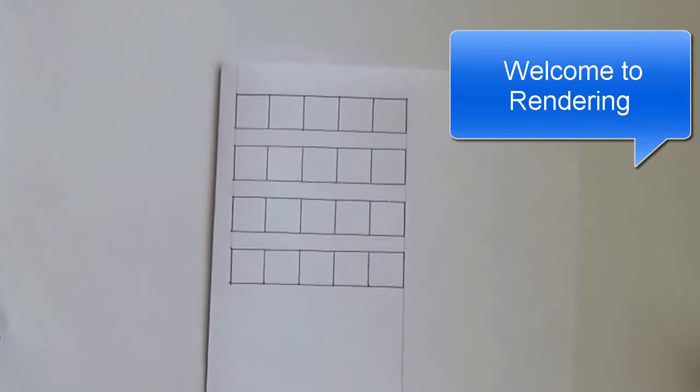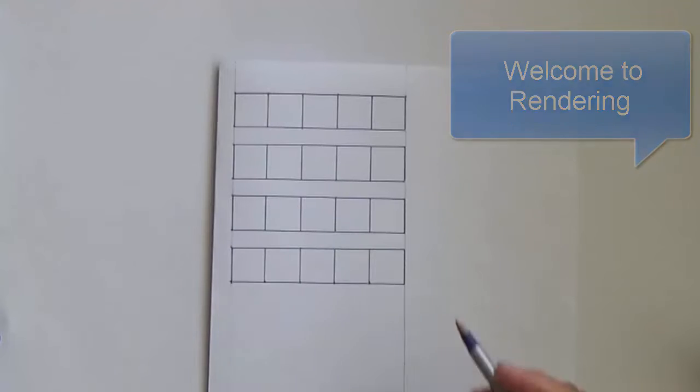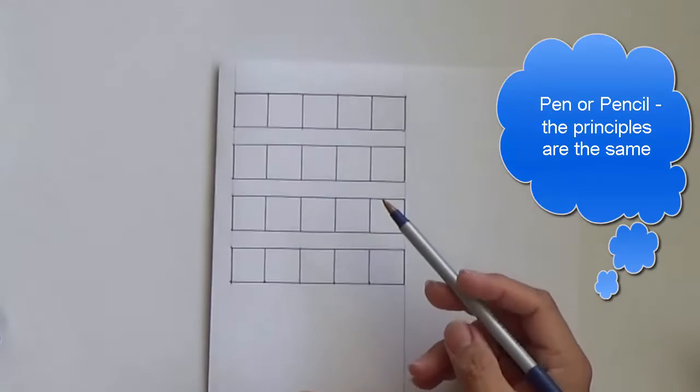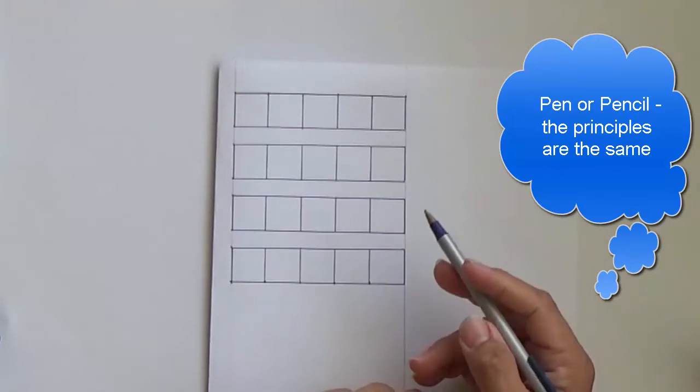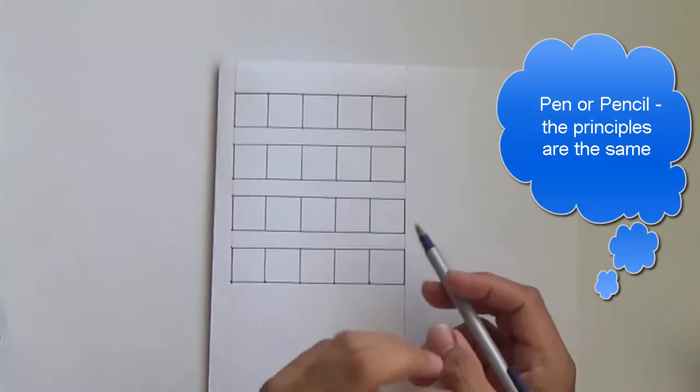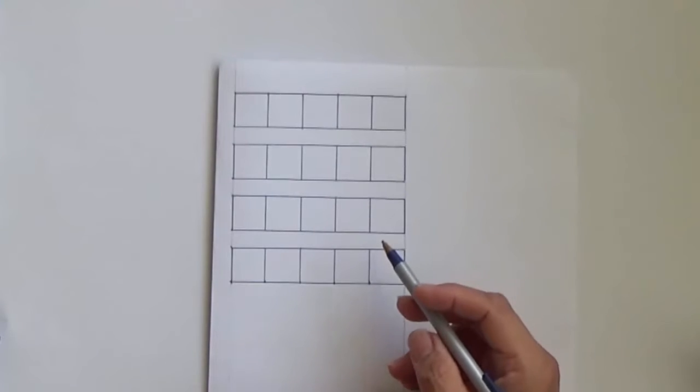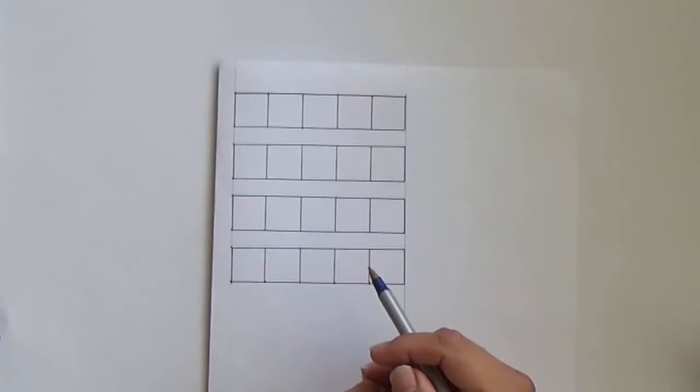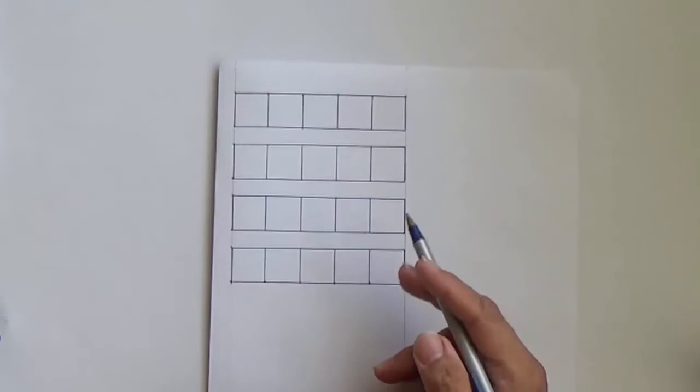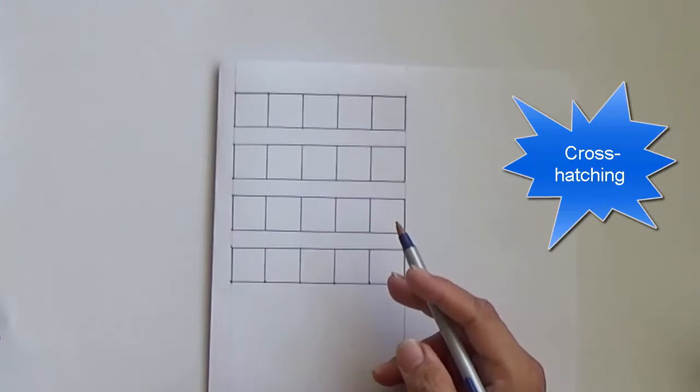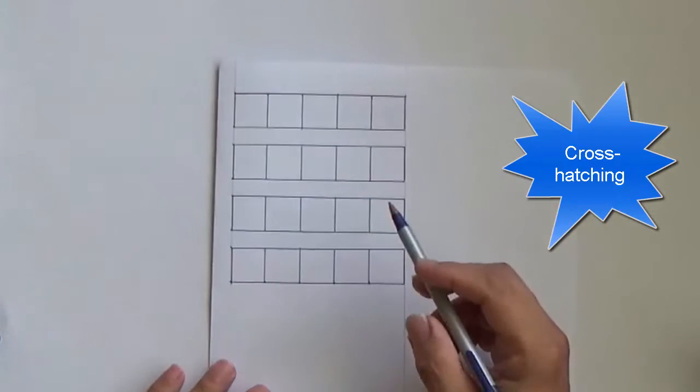Alright, welcome to this module. I'm actually going to do the rendering. I know that you've been told to use a pencil, but I'm going to use a pen. There's a couple of methods to render. Obviously there's the linear, and because I'm using a pen, I am going to do the cross-hatching method because it's easier.